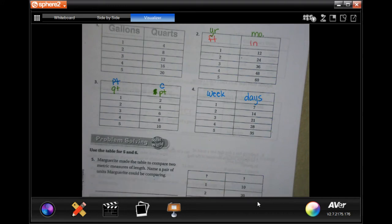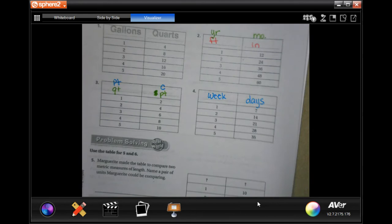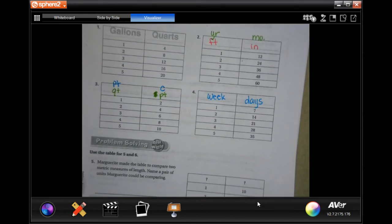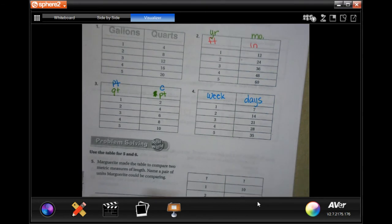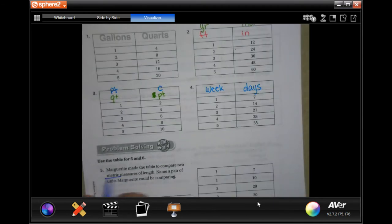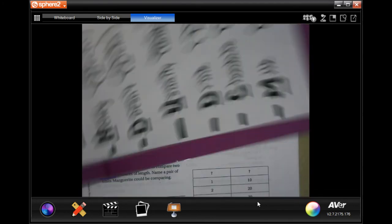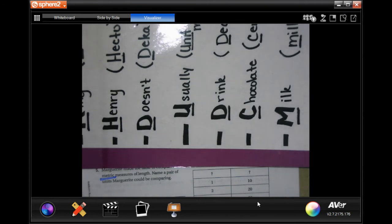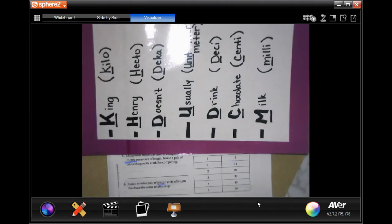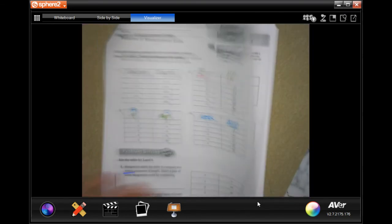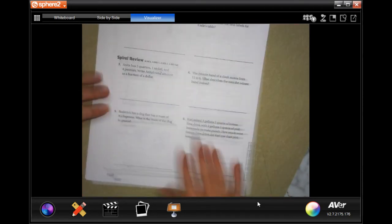These ones are metric. Look at your metric, your King Henry. You guys do those. We're gonna go into the back. You guys can do the lesson check just like always, and we're going to do spiral review.